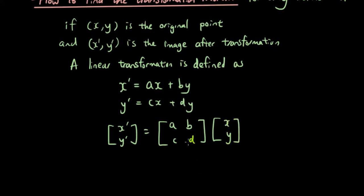You must memorize these equations, but once you have memorized them, it becomes quite easy to find the numbers a, b, c, d for any transformation that we want. So let's talk about how we do that.